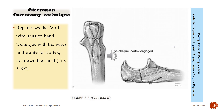Repair: use K-wire tension band technique with the wires engaging the anterior cortex, not down into the canal. Two parallel K-wires should be placed in an oblique manner engaging the anterior cortex, and with the tension band wiring system you can compress the osteotomy site.